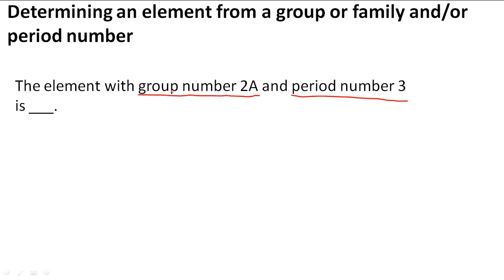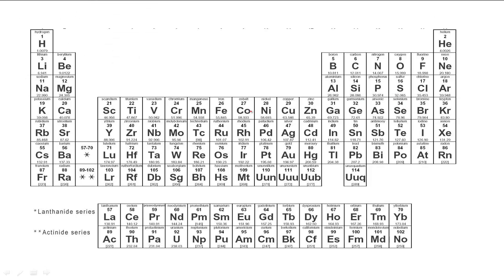We're looking for the element that is in group 2A and period 3. Let's take a look at a periodic table and see which one is in group 2A. We're going to write this up here so we can remember: group 2A with period 3.